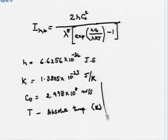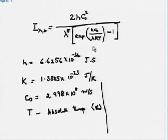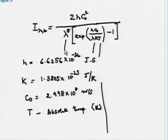With these constants, the intensity of radiation from a black body is a function of only wavelength and temperature. The function is non-linear, with wavelength appearing in the expression.